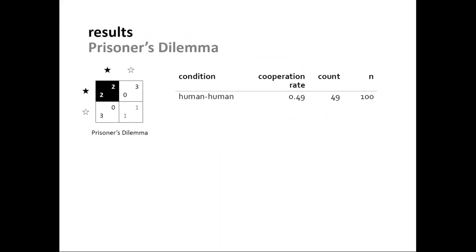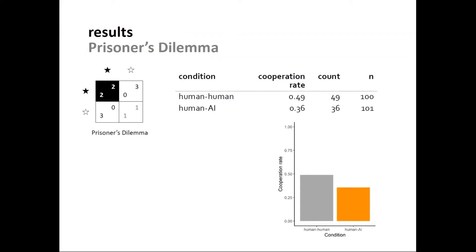Now the results. In Prisoner's Dilemma, in the human-human treatment, about half the people cooperated — 49%. We were happy with this as a replication of the well-known result from one-shot Prisoner's Dilemma games. When people played with an AI agent, cooperation rates dropped from 49% to 36%, and this drop was statistically significant — people cooperated with AI agents significantly less than with humans.